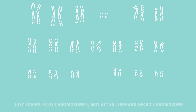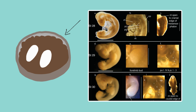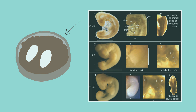Leopard geckos have 19 pairs of chromosomes — actually four less than humans. One major chromosome they are lacking is the sex chromosome, since their gender is actually determined by the temperature they're incubated at in the early stages of development whilst they're in the egg.